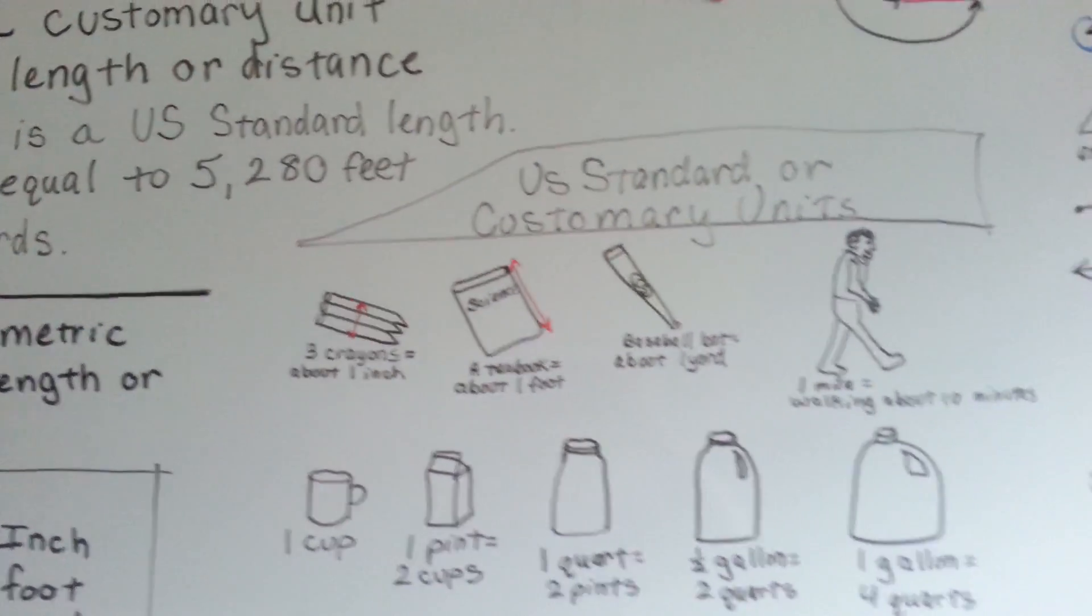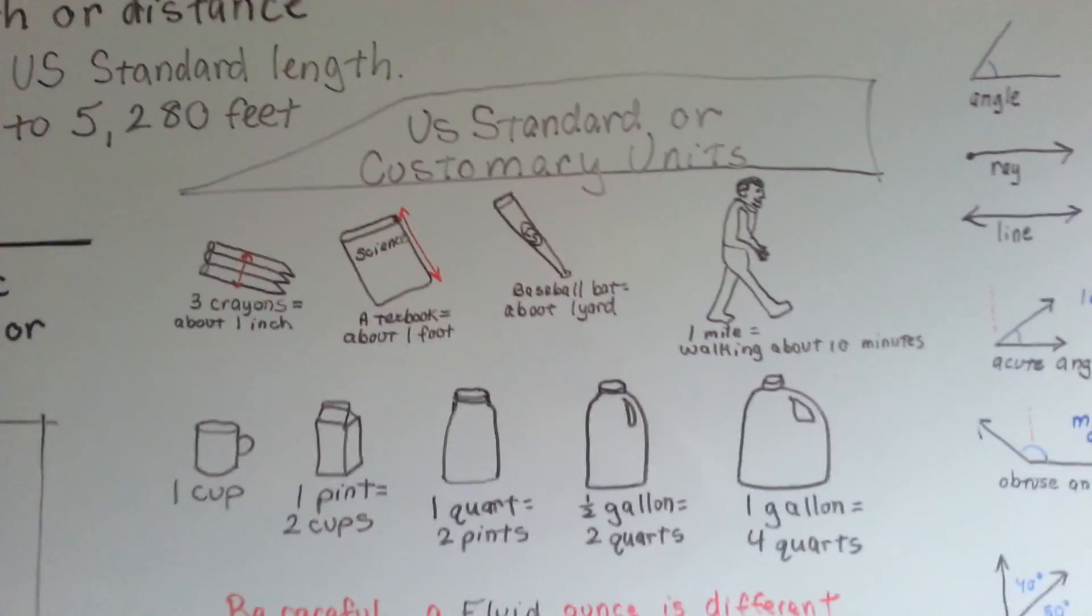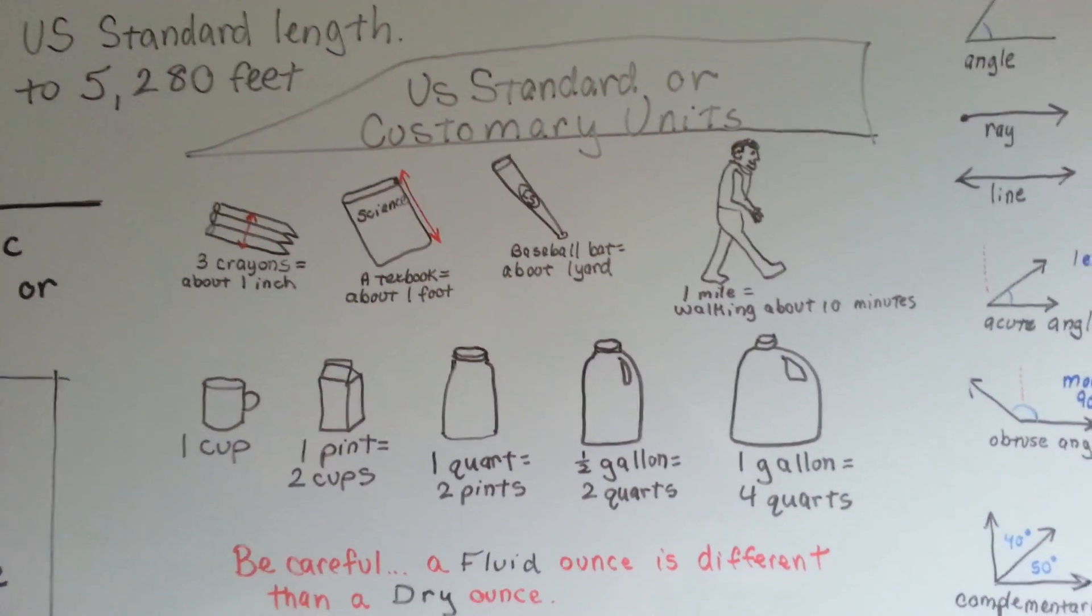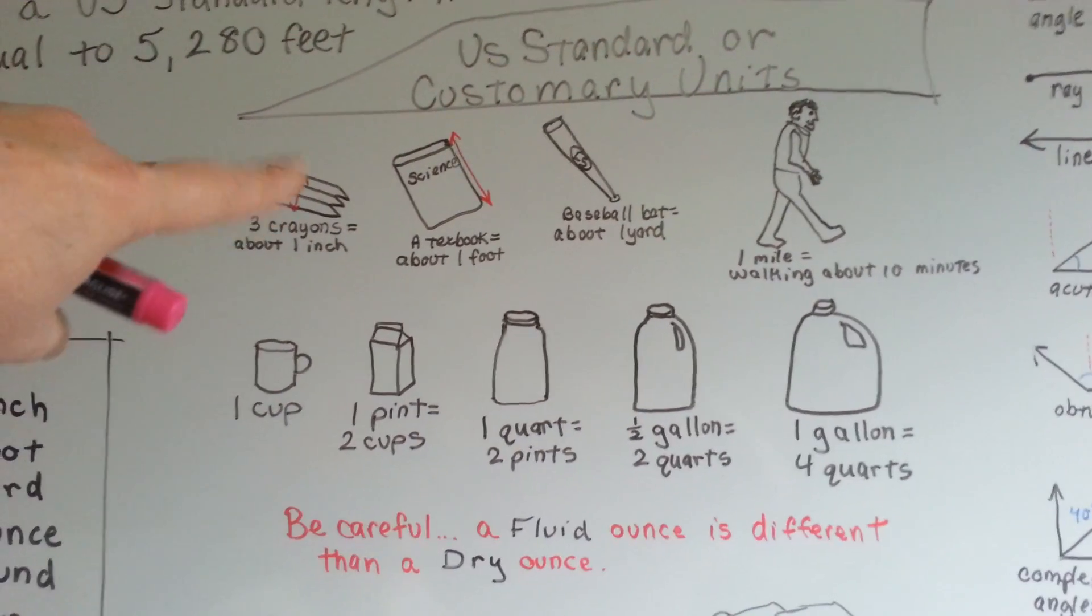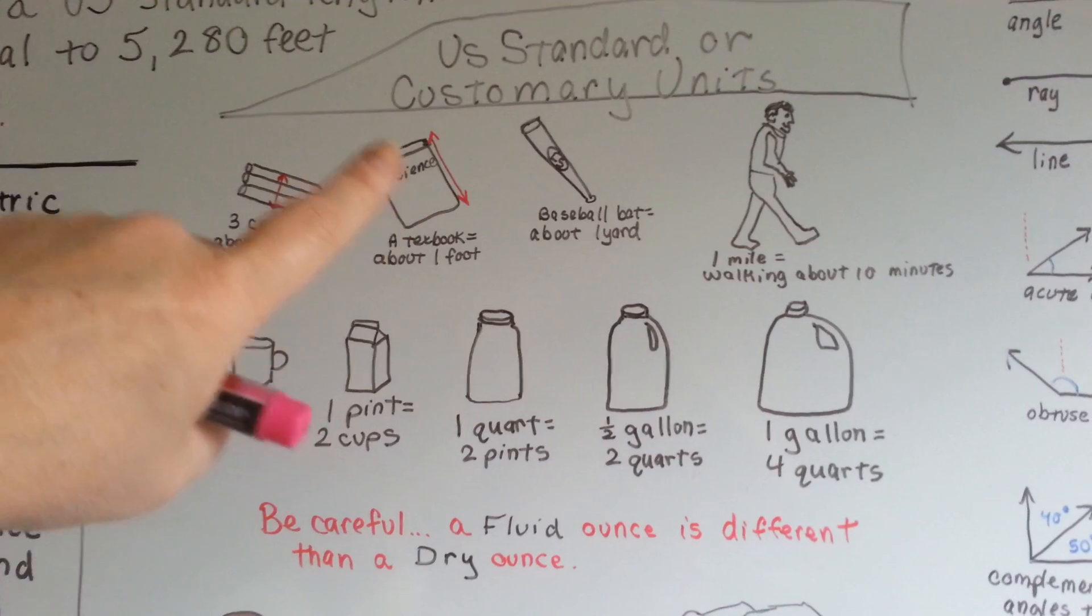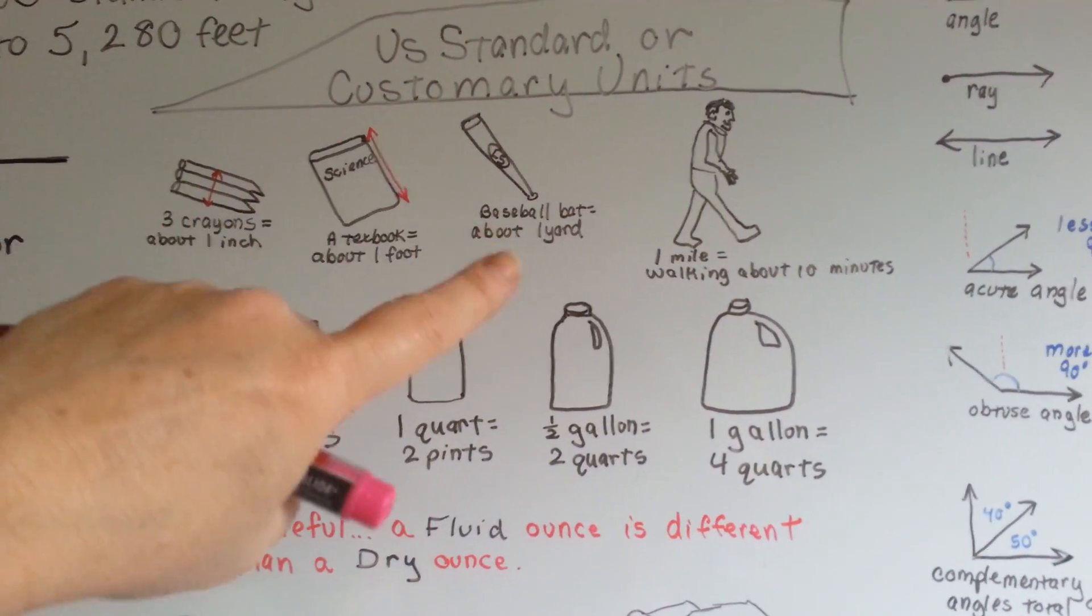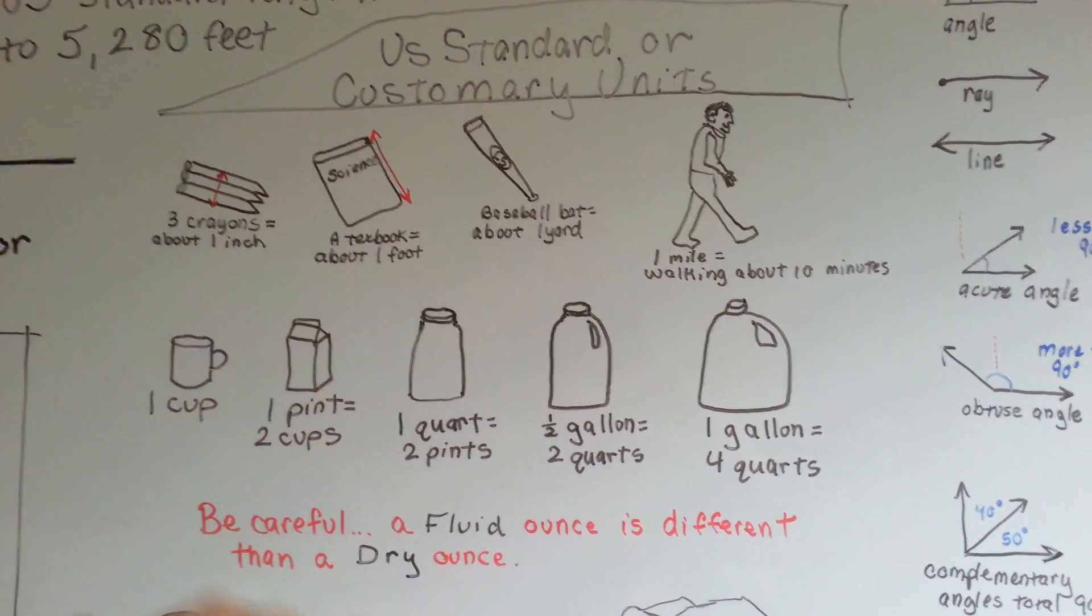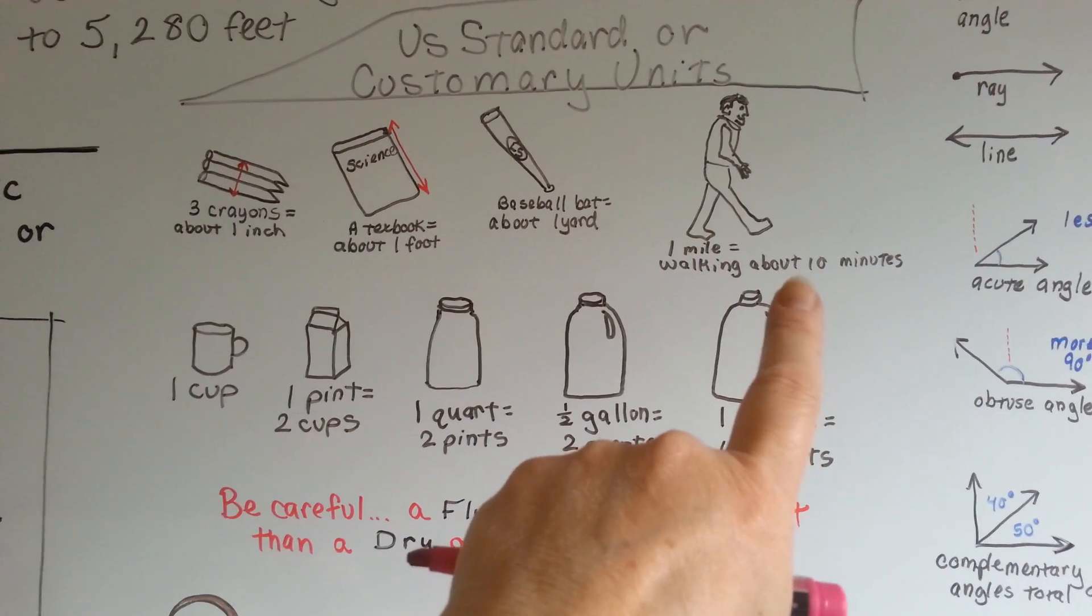To go over what you've learned before, for the U.S. standard or customary units, 3 crayons wide is about an inch, the height of a textbook is about a foot, the length of a baseball bat is about a yard, and a mile is about how far you can walk in 10 minutes.